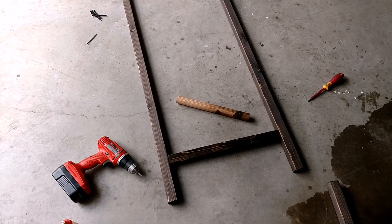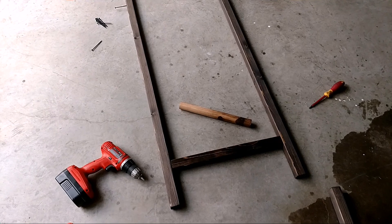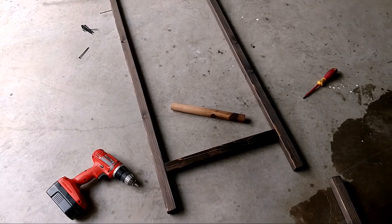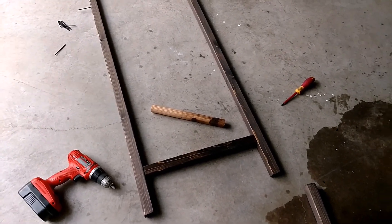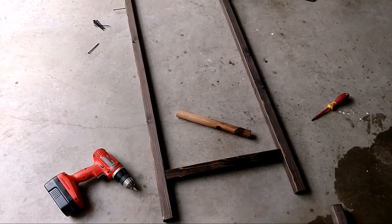So if I actually had a clamp wide enough, it would probably be easier. Set them all in place, glue them, and then put the screws in. Well, glue them, put the clamp on, then put the screws in. But I don't have that luxury. So this is a little more difficult. It's all screwed together.